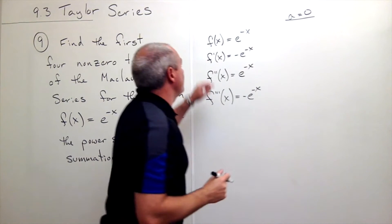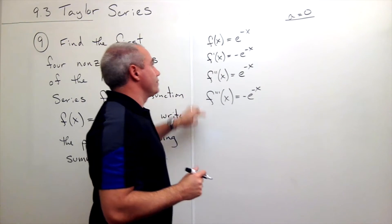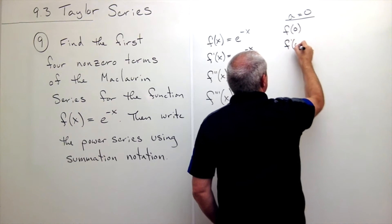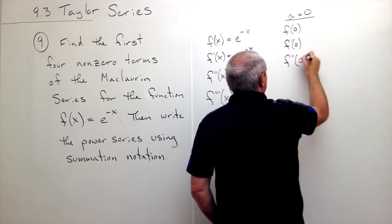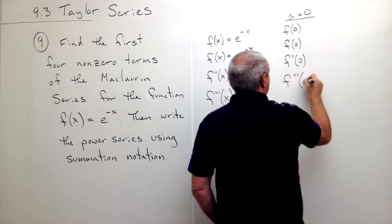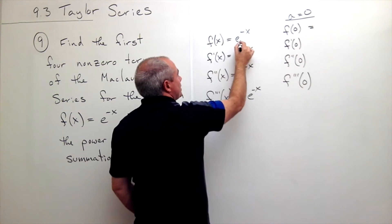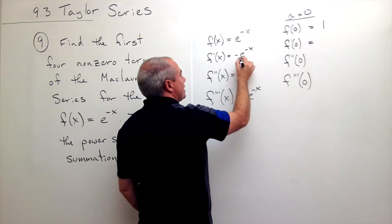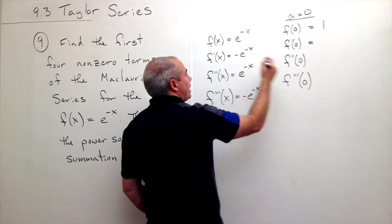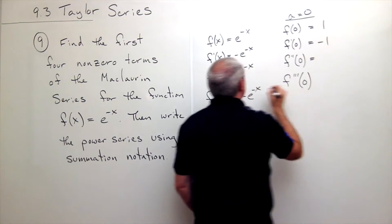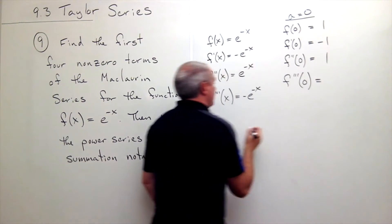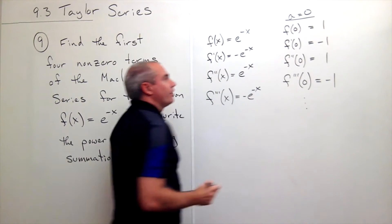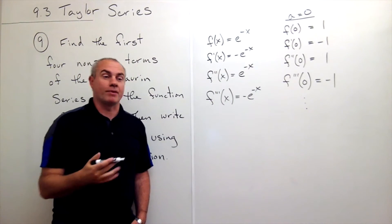So we want to plug in a to each of these derivatives. We want to know: what is f of zero, what's f prime of zero, what's f double prime of zero, what's f triple prime of zero? Well f of zero is e to the negative zero, or e to the zero, which is one. f prime of zero is negative e to the negative zero, which is negative one. Then we get e to the zero which is one, and then we get negative e to the zero which is negative one. We start to see the pattern — it's just going to be one, minus one, one, minus one, and so on.